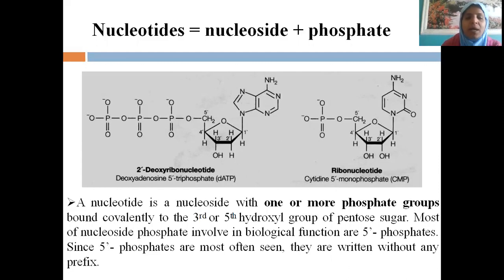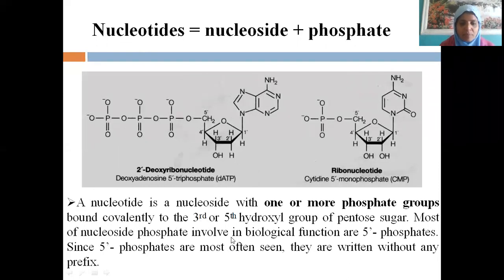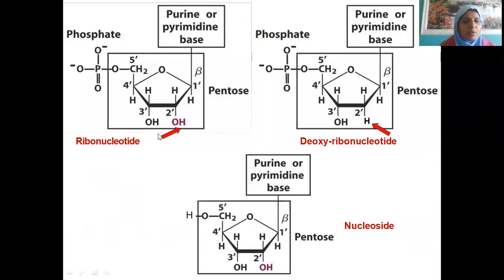Nitrogen base plus sugar is called a nucleoside. Nitrogen base, sugar, and phosphate together are called a nucleotide. A nucleotide is a nucleoside with one or more phosphate groups covalently bound to the third or fifth hydroxyl group of pentose sugar. Most nucleoside phosphates in biological conditions are 5-phosphates and are written without any prefix, such as ATP. If OH is present, it is a ribonucleotide; if H instead of OH, it is a deoxyribonucleotide, found in DNA.